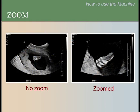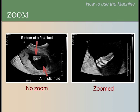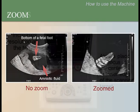This is a view of the bottom of a fetal foot. The image on the left shows the foot, but it is too small. The image on the right shows more detail once it has been zoomed — you can even see individual bones in the toes.